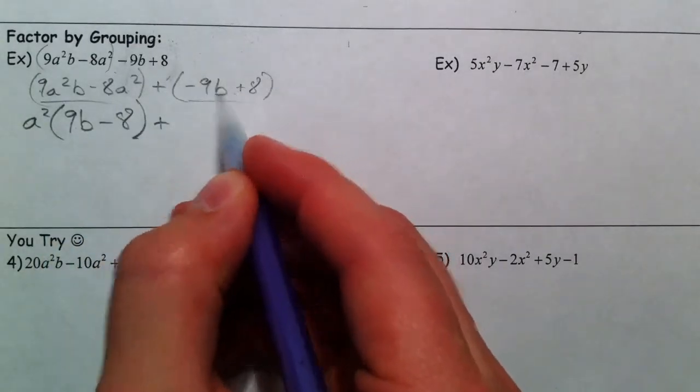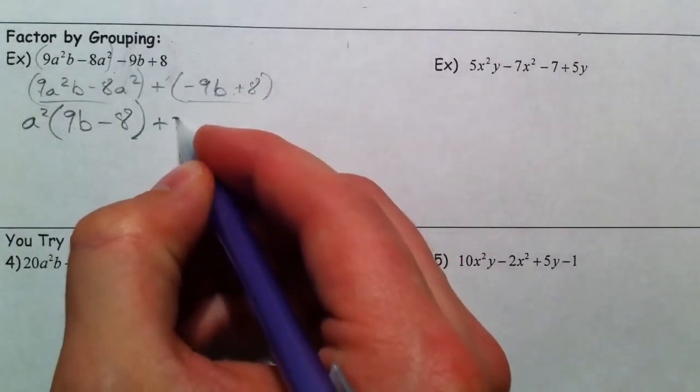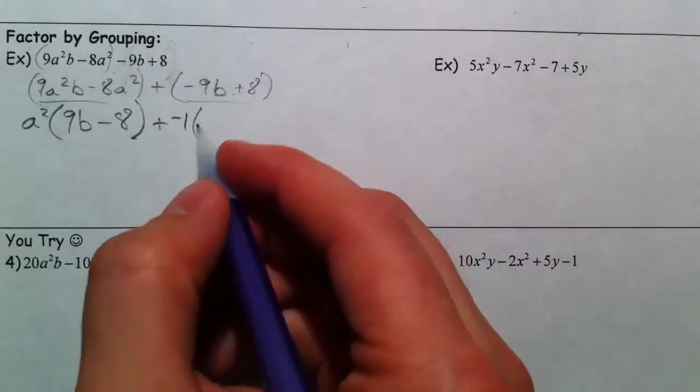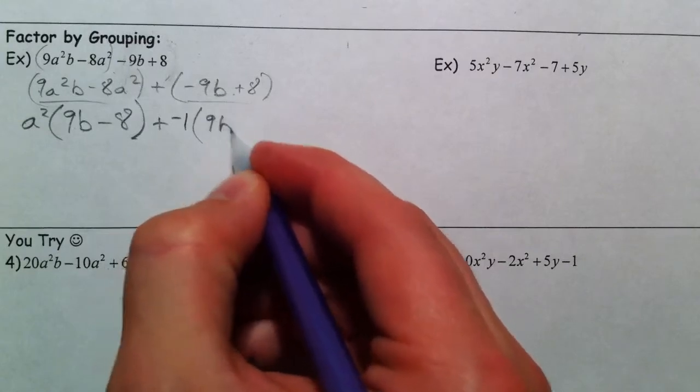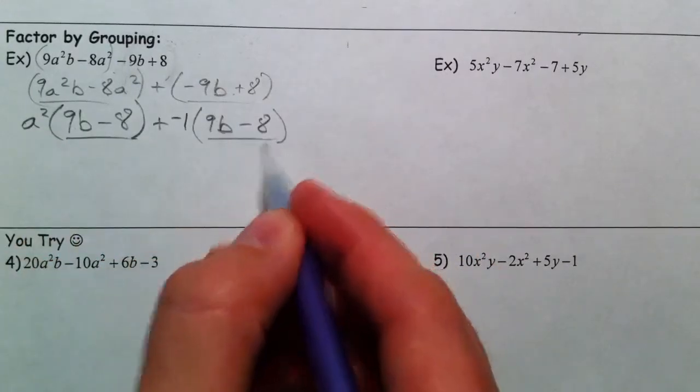Now, this is very close to this. We want these two to match up so that we can factor that out again. I'm going to take out a minus 1, or take out a negative, whichever way you want to think about it. So that we get 9b positive minus 8.